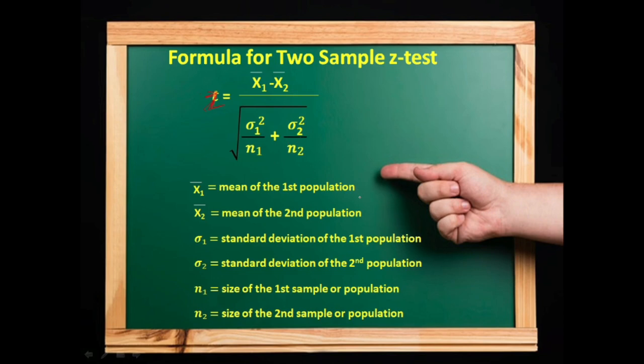Where x1 bar is mean of first population, x2 bar is mean of second population. σ1 is standard deviation of first population, σ2 is standard deviation of second population. n1 is the size of first sample or population and n2 is the size of second sample or population.